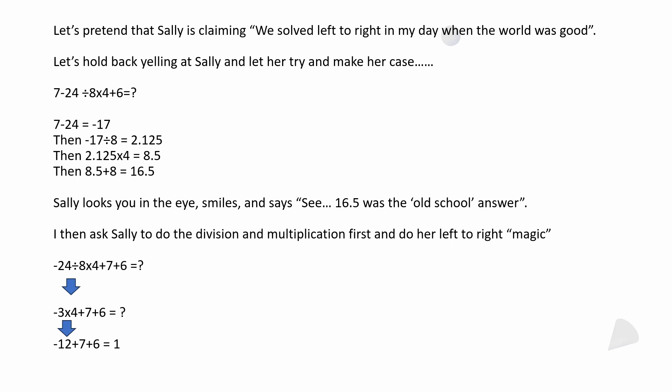Sally will look you in the eye and say it was 14.5, the old school answer. If you say okay Sally, we ask her to do the division and multiplication first and do it left to right. We're going to rearrange it: minus 24 divided by 8 times 4 plus 7 plus 6. It would be minus 3 times 4, right? It goes minus 24 divided by 8 minus 3. It's going to be minus 3 times 4 plus 7 plus 6. If you reduce it down, you get minus 12 plus 7 plus 6 equals 1. We do expect that, because we already said before, if you move the division and multiplication all the way over, you will get the right answer, and you get 1.